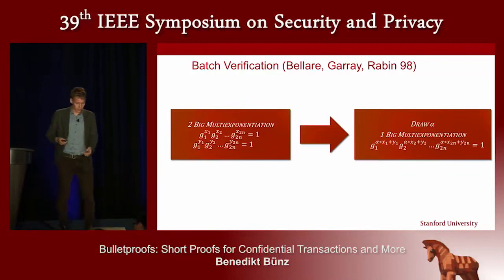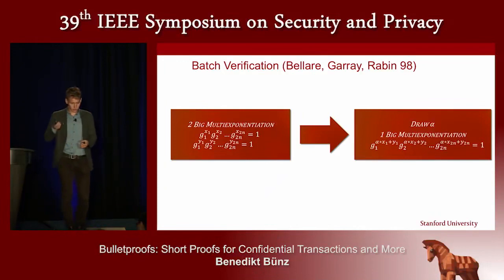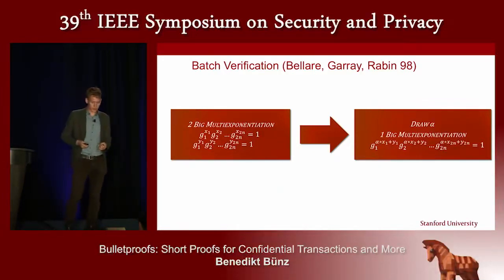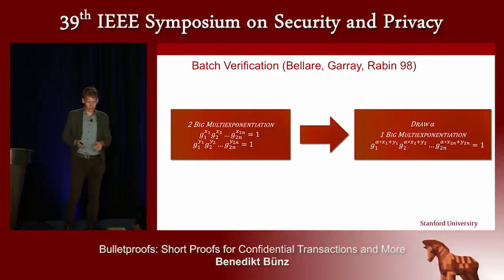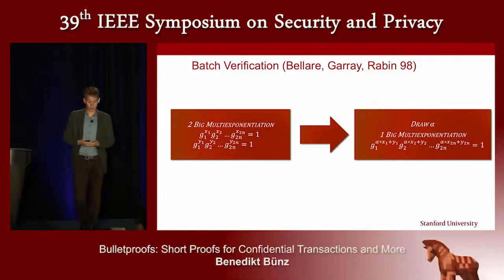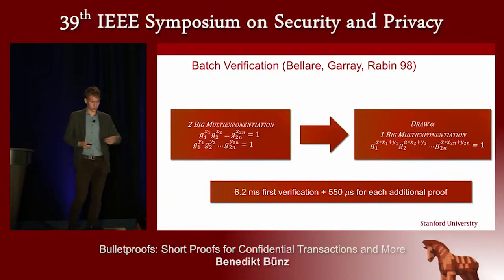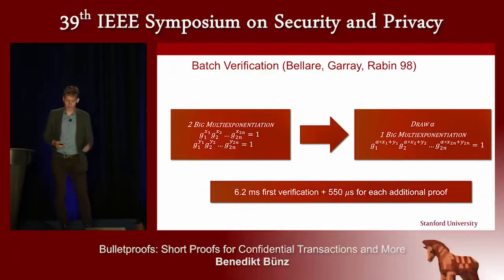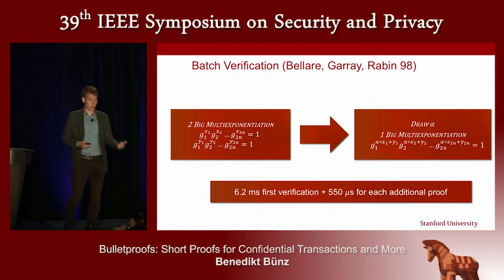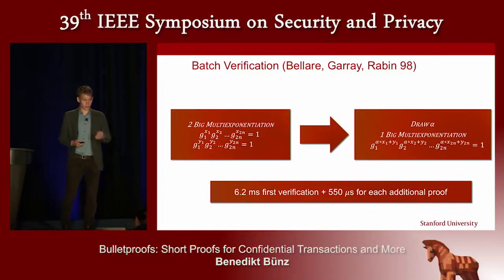To check two proofs means checking two different multi-exponentiation equations. Using a batch verification trick, we combine these two verifications by taking a random linear combination into one big multi-exponentiation. Because the exponentiation part is far more expensive than scalar operations, this gives a big win. Verifying the first proof — say for two range proofs — is 6.2 milliseconds, but each additional proof is more than a factor of 10 faster, since the additional operations are almost only scalar operations.